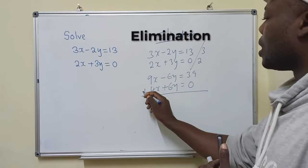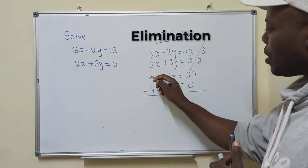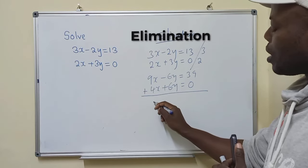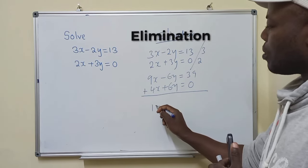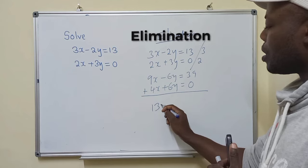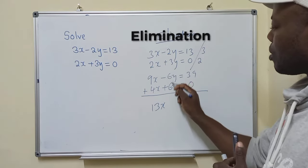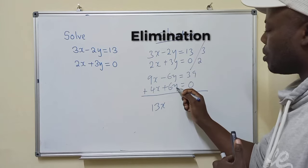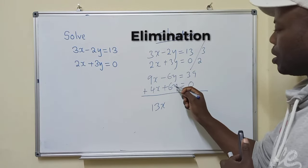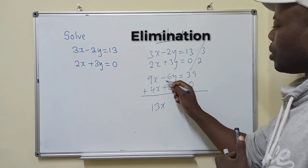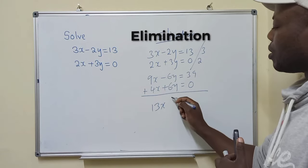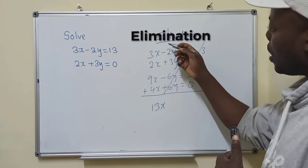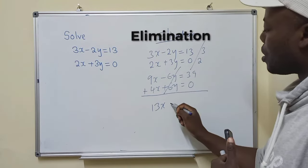We put a line and then we say plus. We start adding them. So 9x plus 4x, that will give us 13x. Here, what are we going to get? Negative 6y plus 6y. It's just 0. So these will cancel, and this is where the name comes from for elimination, because we cancel here.